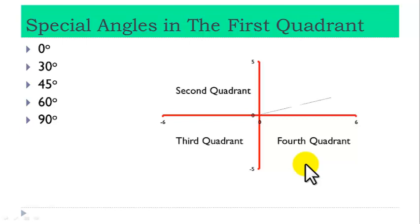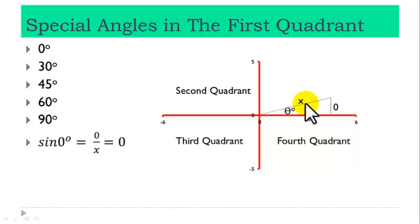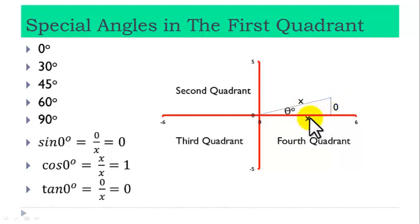We draw a right angle triangle in the first quadrant. Let this angle be theta degrees. Clearly, for this angle to become 0 degrees, the opposite side must be 0. The adjacent side and the hypotenuse side must be equal. So the opposite side is 0. Let the adjacent side be x and the hypotenuse side be x. Sine 0 is opposite over hypotenuse: 0 over x is 0. Cos 0 is adjacent over hypotenuse: x over x is 1. And tan 0 is opposite over adjacent: 0 over x is 0.